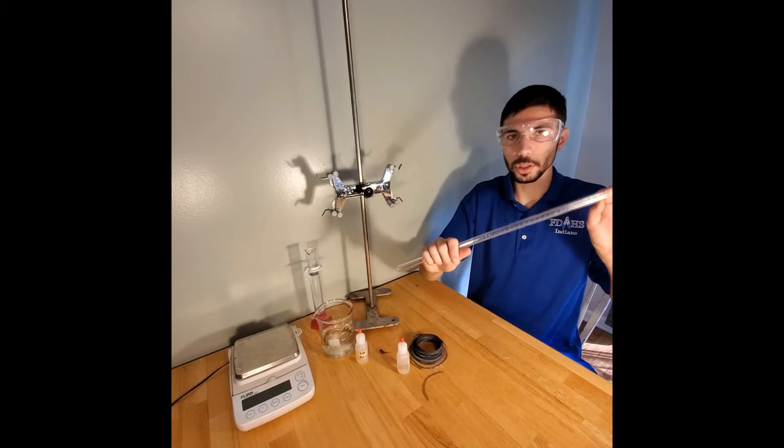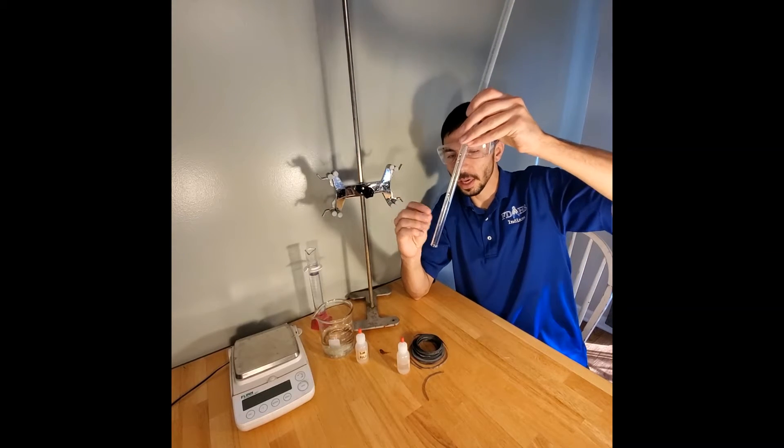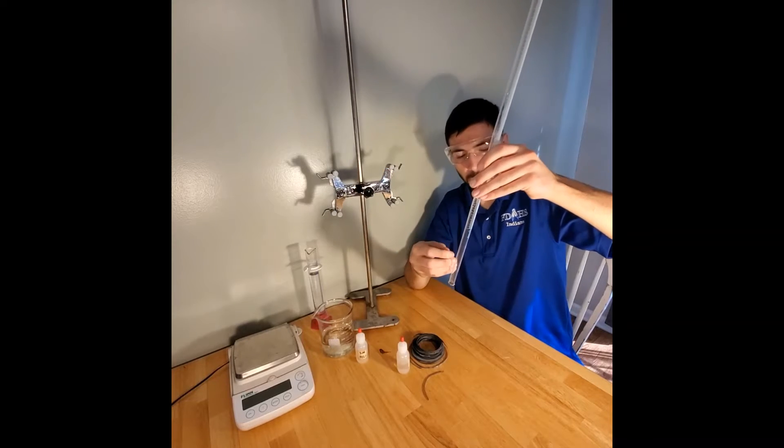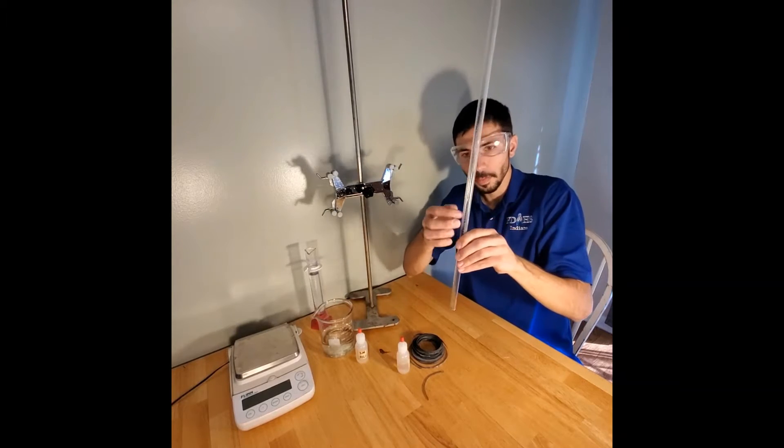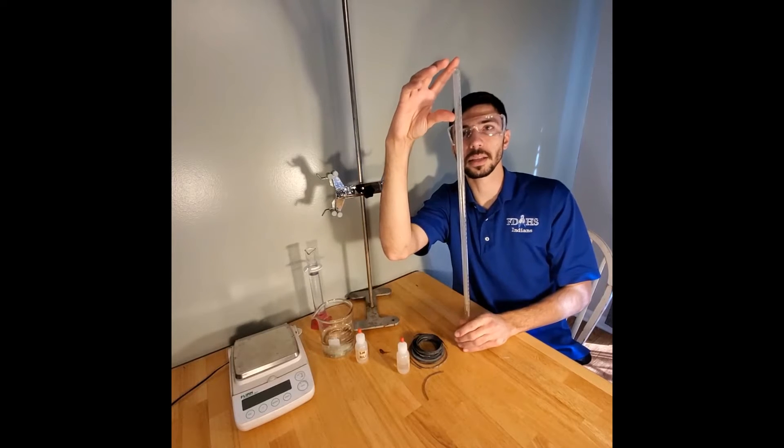We want to collect that gas, we don't want that gas to escape. So what we're going to do is we are going to do the reaction right down here at the bottom of our eudiometer, and when those things react it will form bubbles and those bubbles are going to go all the way up to the top and we can measure exactly the volume.